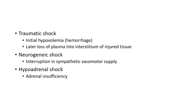Apart from the three major types, there are minor types. In traumatic shock, initially the shock is due to hypovolemia from hemorrhage, but even after hemorrhage is controlled, patients continue to suffer loss of plasma volume into the interstitium of injured tissue, causing continuation of shock. Neurogenic shock results from interruption of sympathetic vasomotor supply. Hypoadrenal shock results from adrenal insufficiency, where fight-or-flight hormones are insufficient and the patient fails to respond normally to stresses like trauma or illness.